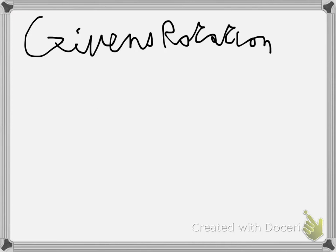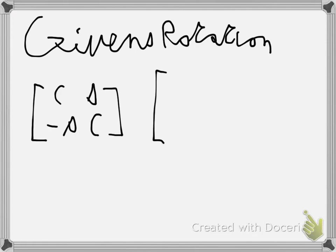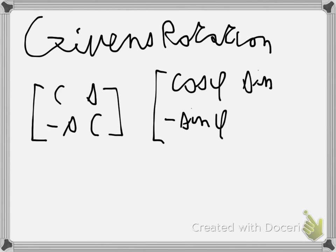A Givens Rotation is a matrix that has the following structure. Here we are in two dimensions, but we can do that in whatever dimension we want. The C stands for cosine and the S for sine. Most of the time we don't need to find the angle.